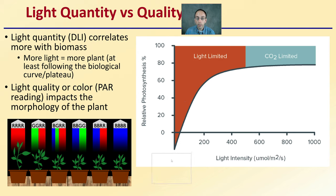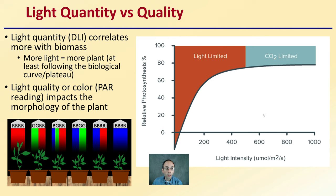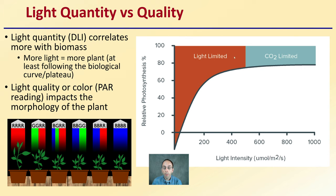When looking at light, we also need to consider light quantity and light quality. Light quantity, or DLI (daily light intensity), correlates more with biomass — more light equals more plant, at least following the biological curve or plateau, as it's not a linear exponential curve but a plateauing region. Light quality, or color — which is a PAR reading — impacts the morphology of the plant. More red wavelengths cause the plant to stretch more, while more blue wavelengths keep it compact with closer internode spacing. With light intensity and photosynthetic rate, some areas can be light-limited and some can be CO2-limited, which all goes back to the photosynthetic equation and how those components relate to cannabis production.